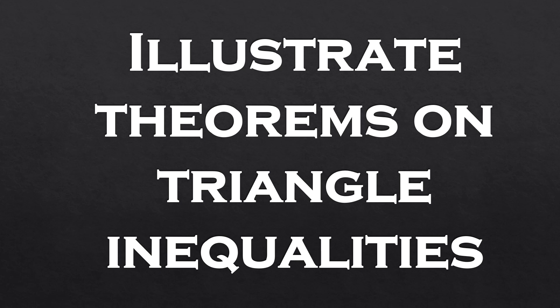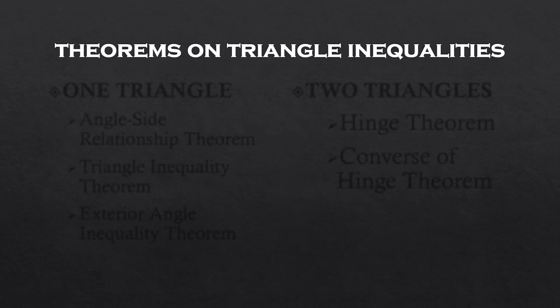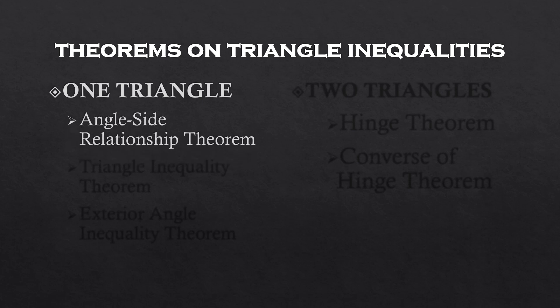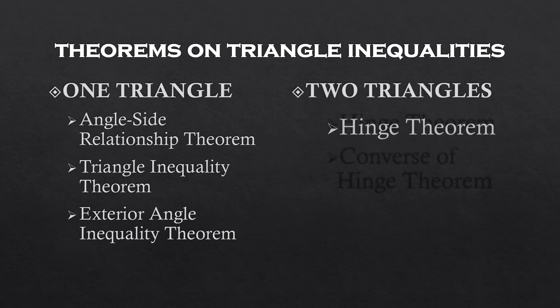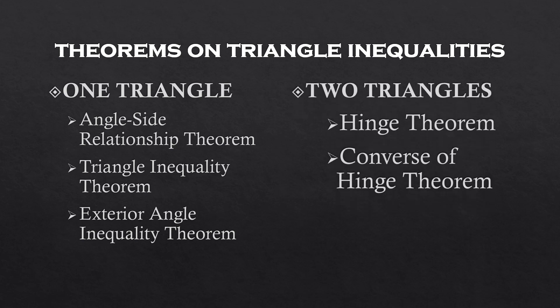Good day everyone. Today we are going to discuss illustrating theorems and triangle inequalities. There are various theorems and triangle inequalities. These theorems can be illustrated in one triangle and in two triangles. The most commonly used theorems in one triangle are the angle-side relationship theorem, triangle inequality theorem, and exterior angle inequality theorem. On the other hand, the hinge theorem and the converse theorem illustrate the inequalities in two triangles.